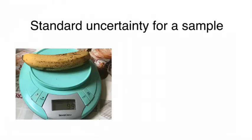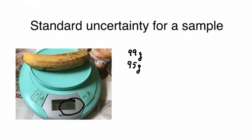Standard uncertainties can come in different forms, and one very common case is where we look at the standard uncertainty for a sample. Let's say we make a number of measurements — for example, the weight of a banana or several bananas. I put a banana onto kitchen scales and record the weight: one banana weighs 99 grams, one weighs 95 grams, and one weighs 92 grams.